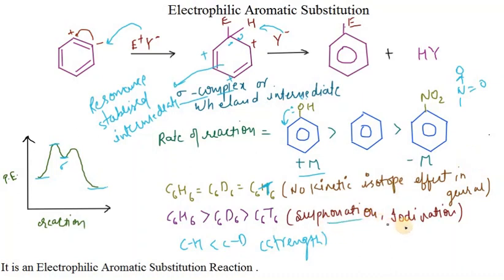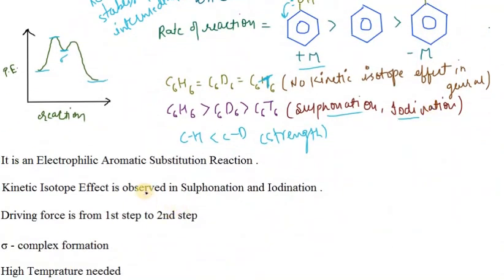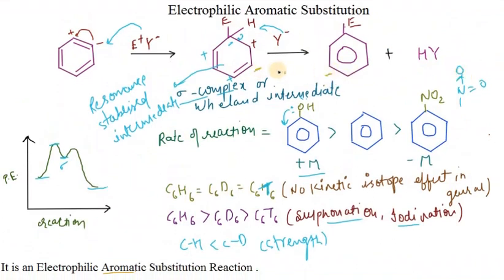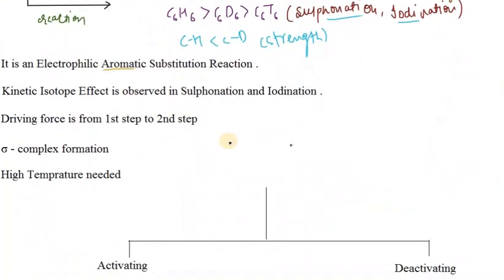In sulfonation and iodination, the rate follows the kinetic isotope effect. In electrophilic aromatic substitution, one electrophile substitutes another on the aromatic compound. The driving force of the reaction is breaking of the hydrogen bond and moving from a resonance-stabilized intermediate to the aromatic product, which is considerably more stable.